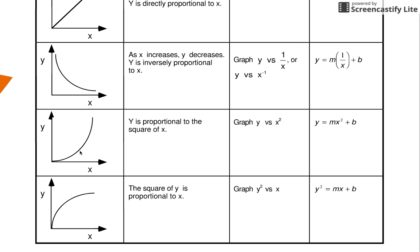The next curve is one where as x gets bigger, y also gets bigger but much faster. Typically the one we see here is called the squared relationship — y is proportional to the square of x. To check that this is truly a squared relationship, you don't want to assume — it could be to the cubed power, the fourth power, or something else.